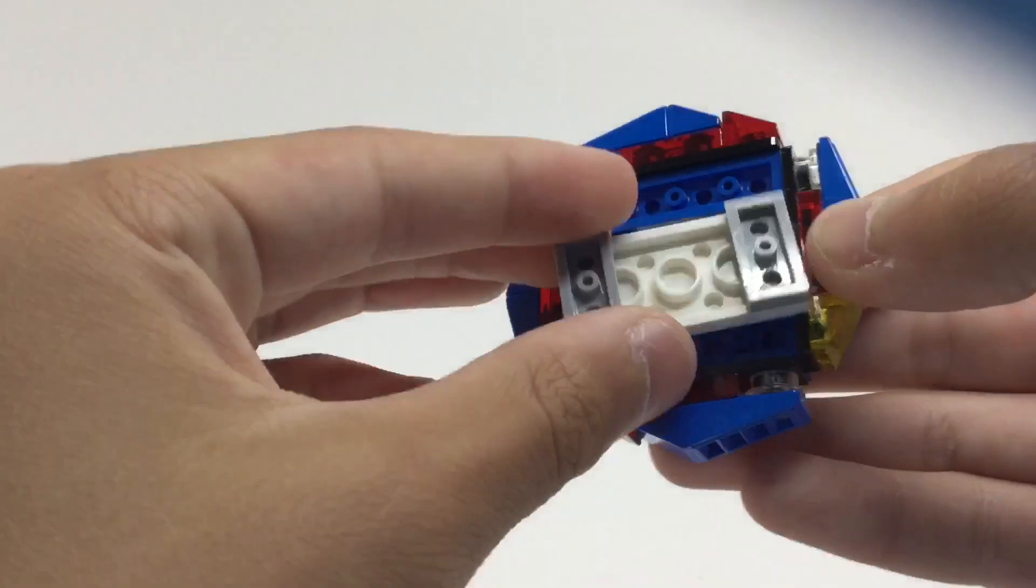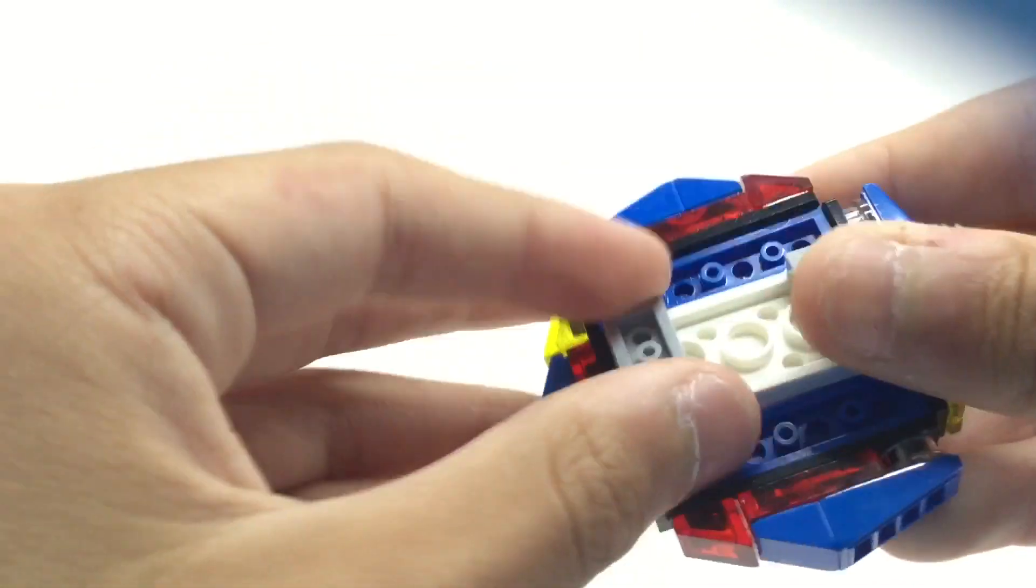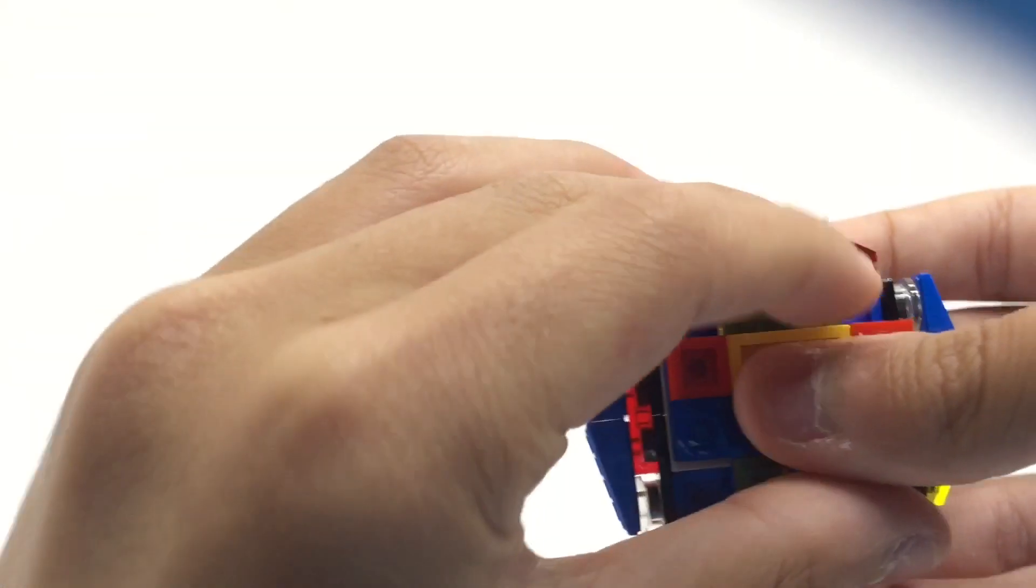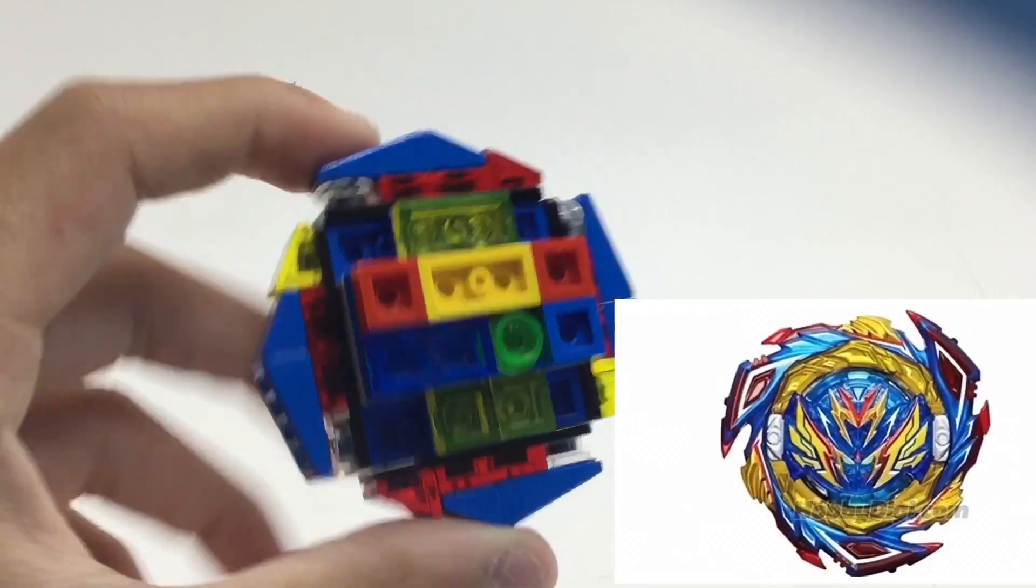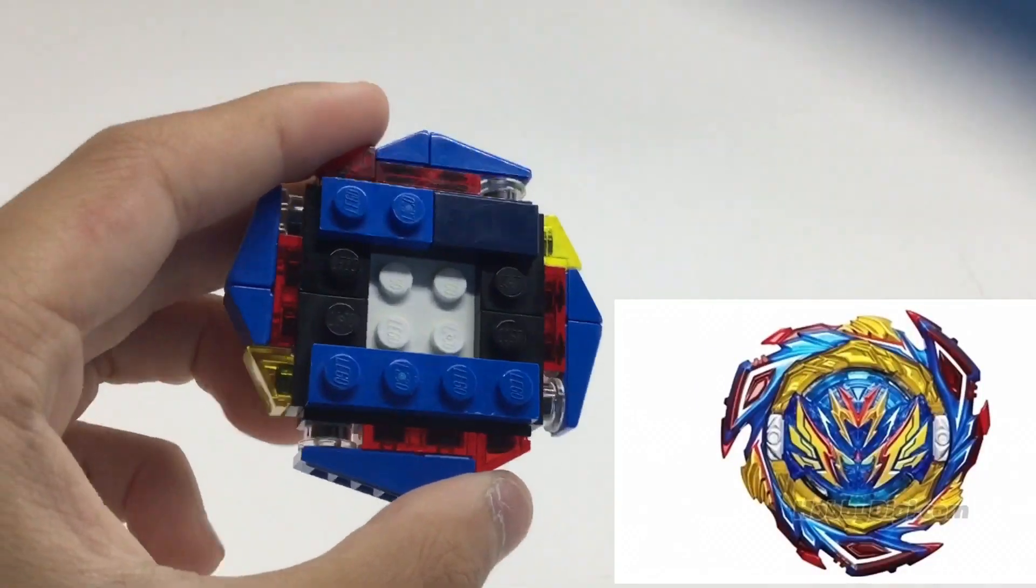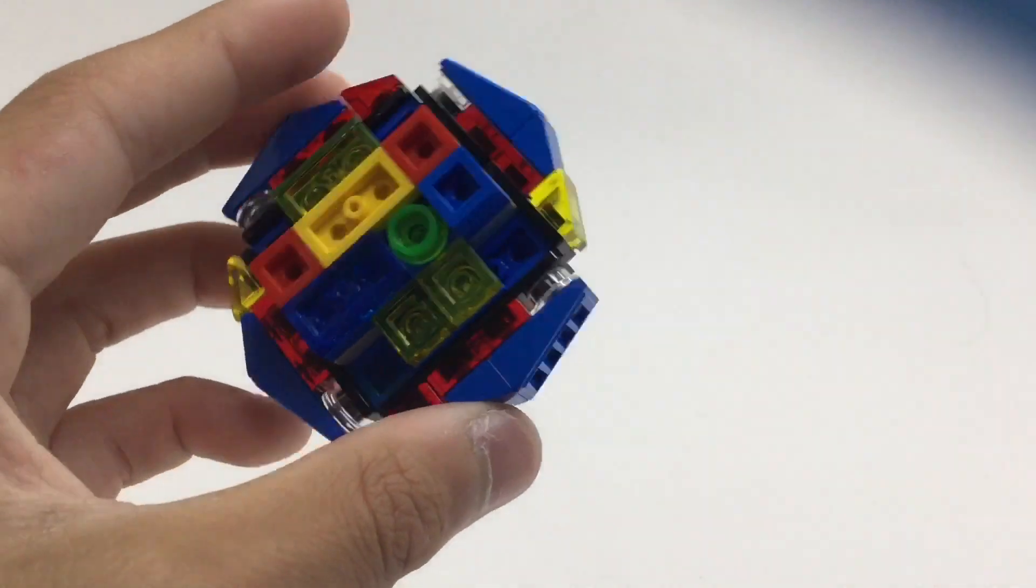Now we can assemble the completed layer. We have our blade, armor, and our chip. That is the Saber Valkyrie. Yeah, and later updates will be issued once we have all the parts.